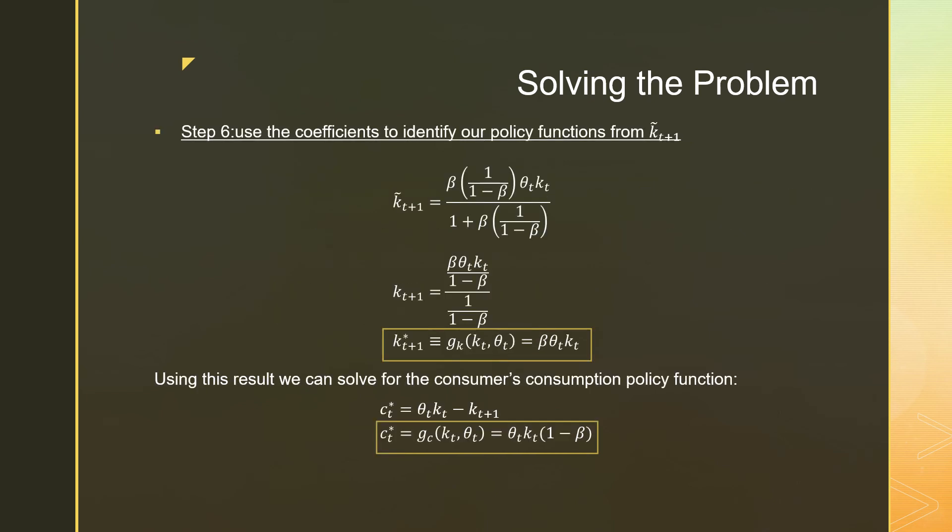Step 6 is that we use the coefficients to identify our policy functions from KT plus 1. Again, some more algebra. But the policy function that we get, which is GK as a function of KT and theta T, is equal to beta theta T KT. So that's how we're supposed to be saving at any specific point in time.